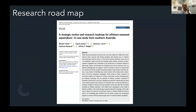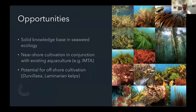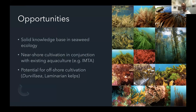This was recently published in Reviews in Aquaculture, if anyone is interested. In terms of opportunities: we have a solid knowledge base in Australia on the ecology of most of these species. I believe we first have to understand the near-shore cultivation — either in conjunction with existing aquaculture, for example in an IMTA setting, which in an Australian context will alleviate the lack of nutrients — and then follow up on the potential for offshore, specifically for Durvillaea but also the laminarian kelps.